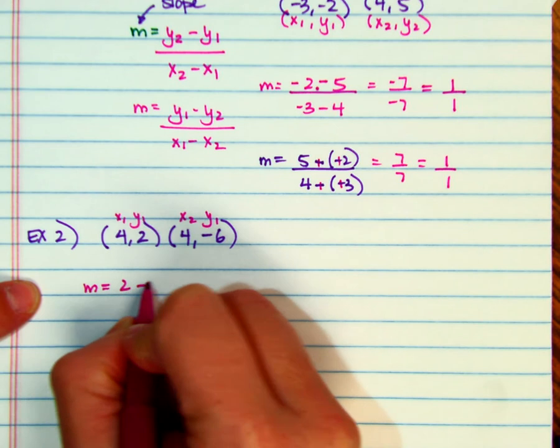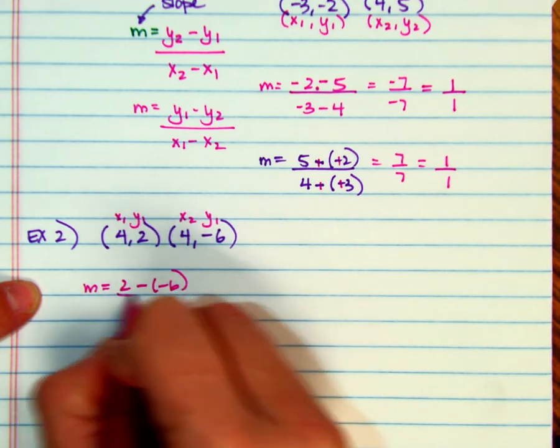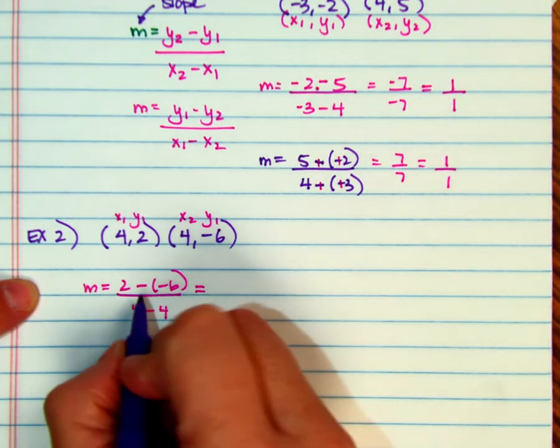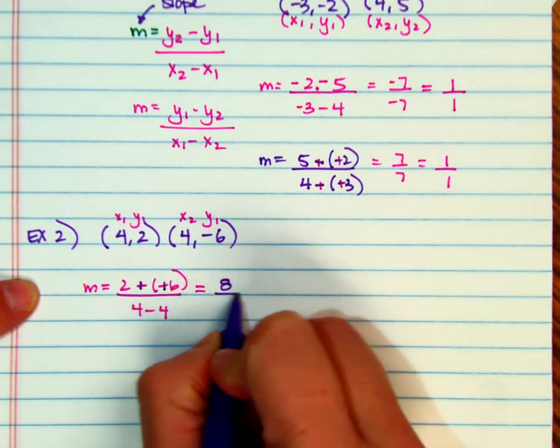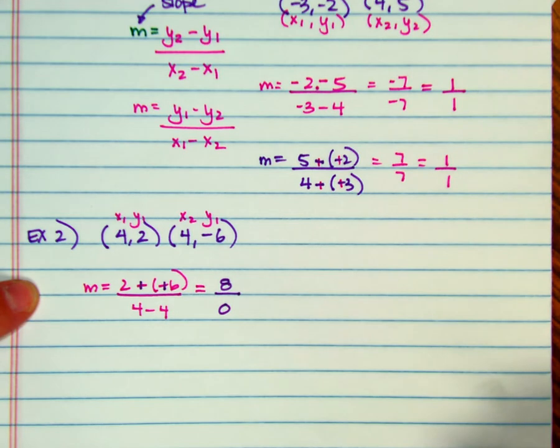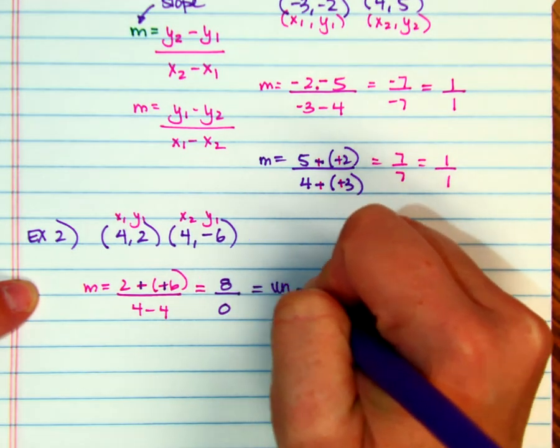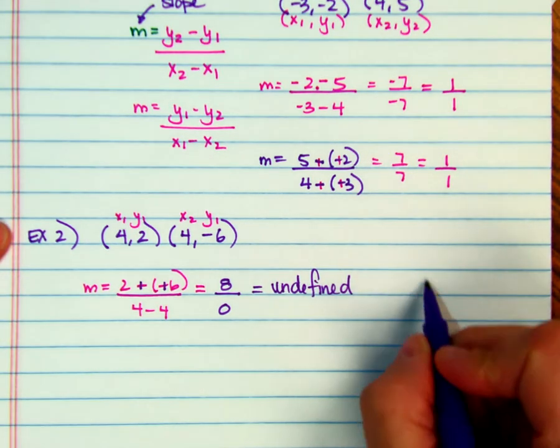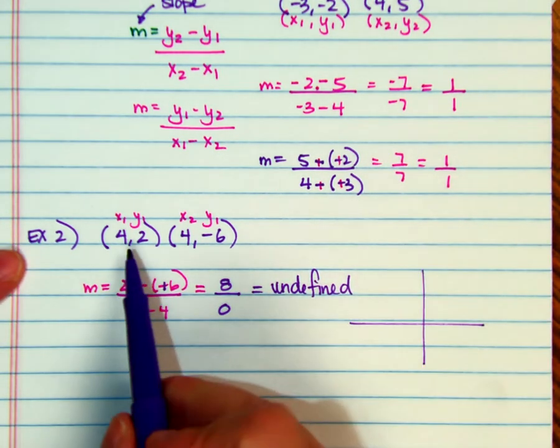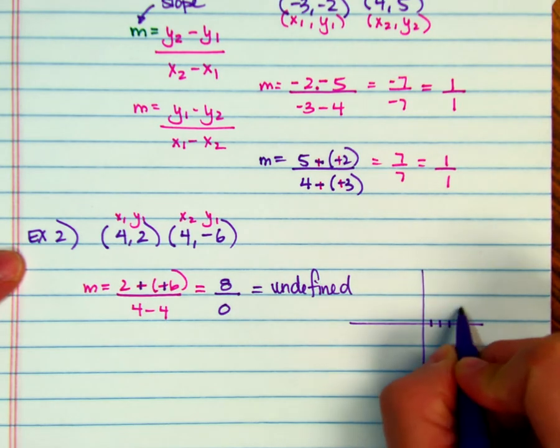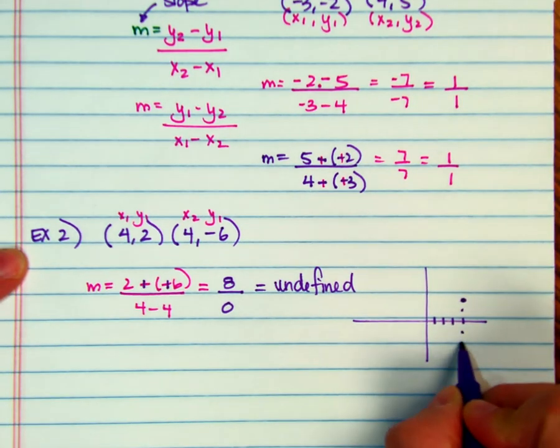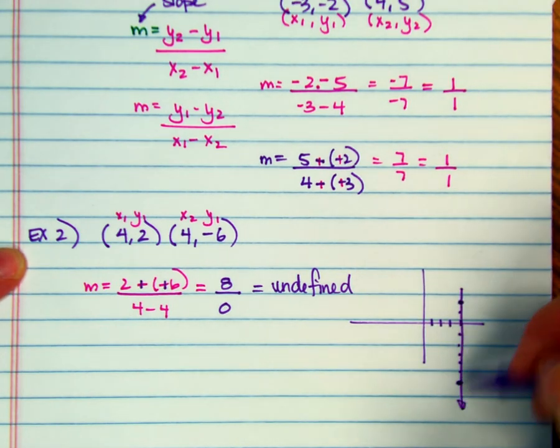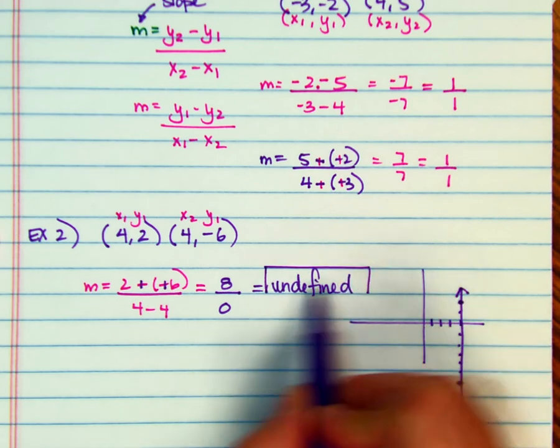So change in y, so it's 2 minus a negative 6 over 4 minus 4. Minus a negative is plus a positive. It gives me 8 over 0, and we have learned that that means that these are undefined. So if I were to graph this line, I'm going to end up with a vertical line. So 4, 2, and 4, negative 6 is going to give me that vertical line, so it does have an undefined slope.